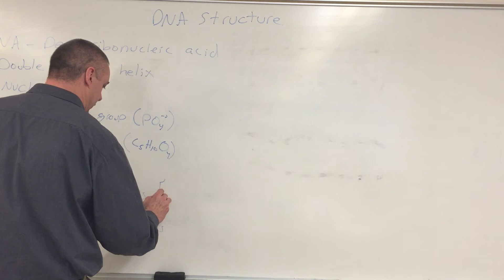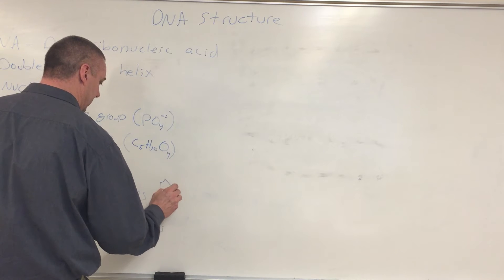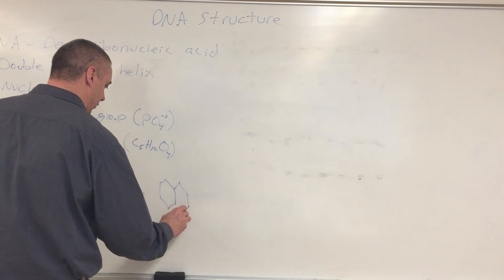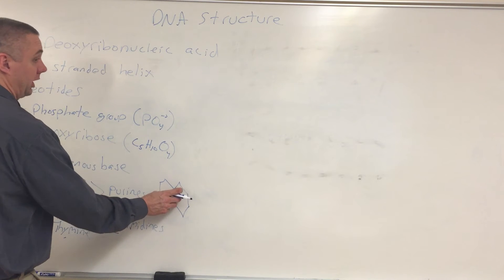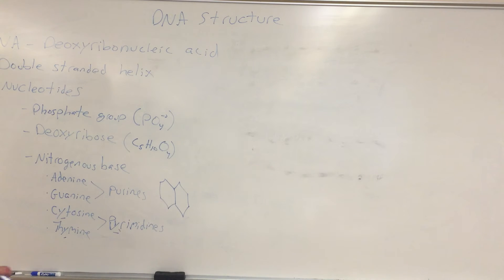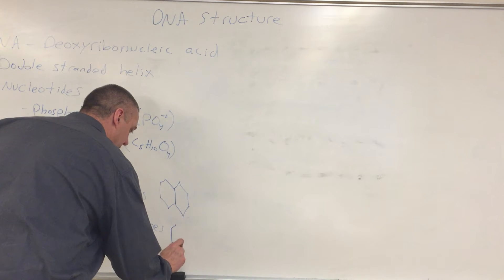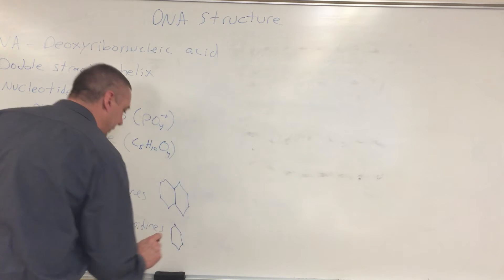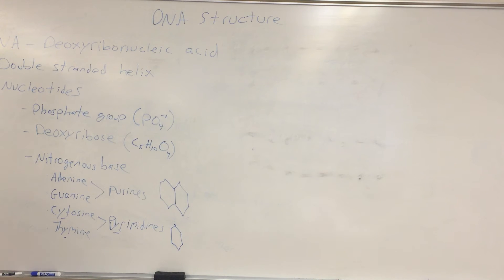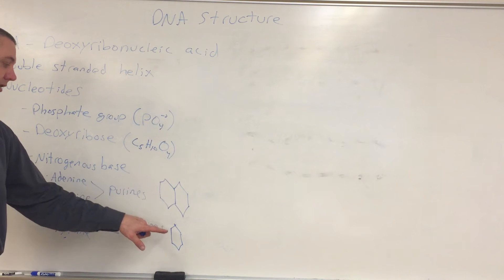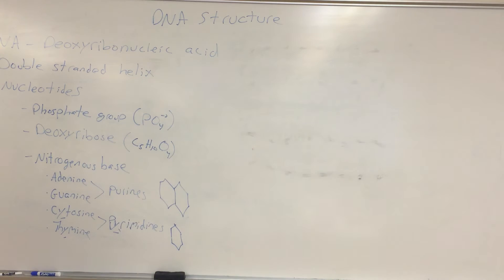Pyrimidines, and these are not to scale or even correctly drawn, but purines are larger. They're double-ring structures. The pyrimidines are smaller because they're only single-ring structures. So the purines are larger because they're double-rings. Pyrimidines are smaller because they're only single-rings.